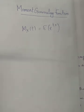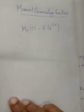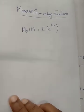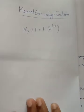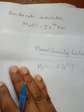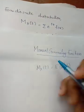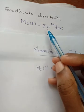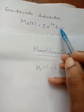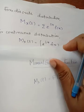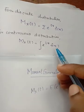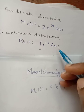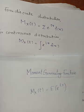For the discrete case, M_X(t) is the summation of e raised to tx times f(x). For the continuous case, it is the integral of e raised to tx times f(x). This is one definition of the moment generating function.